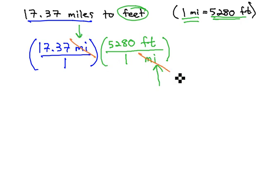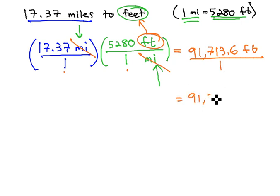We now see the miles in the numerator and denominator dividing out, leaving just the feet that we're looking for. We know to multiply fractions straight across, 17.37 times 5,280 gives us 91,713.6 feet over 1 times 1, which is 1, or just 91,713.6 feet. We've made our conversion.